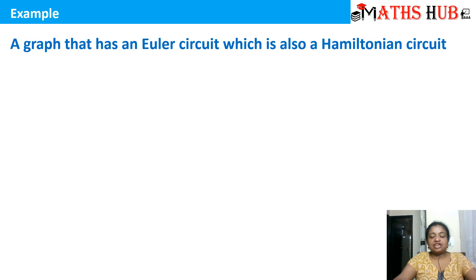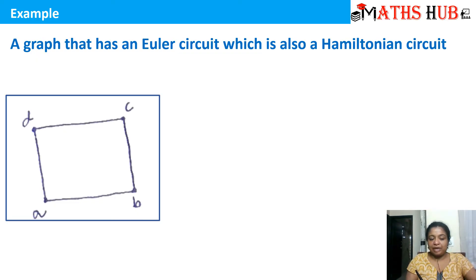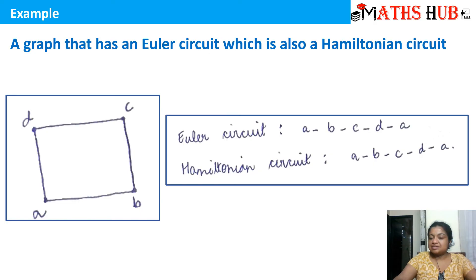Let's look at a graph which has both an Eulerian circuit and a Hamiltonian circuit that are the same. For the Eulerian circuit: starting from A — A to B, B to C, C to D, D to A — this covers all edges exactly once. Likewise, A to B, B to C, C to D, D to A is also a Hamiltonian circuit, since all vertices are covered exactly once. So here the Eulerian and Hamiltonian circuits are identical.